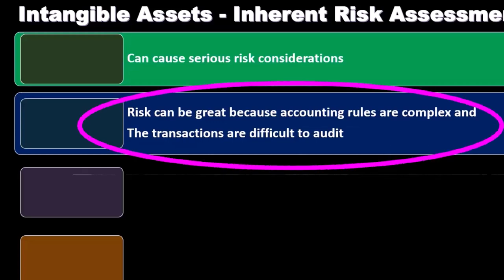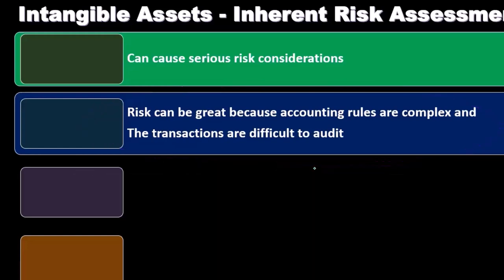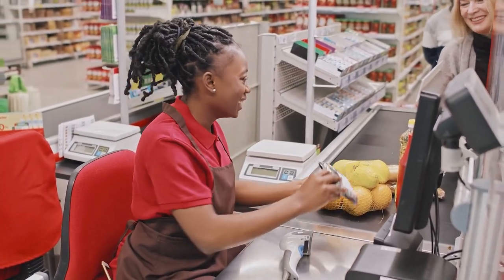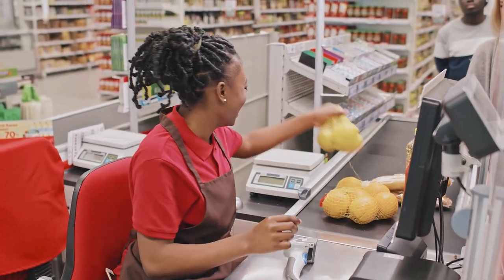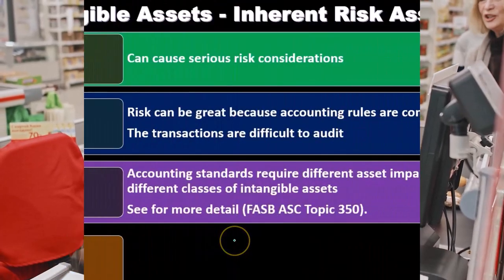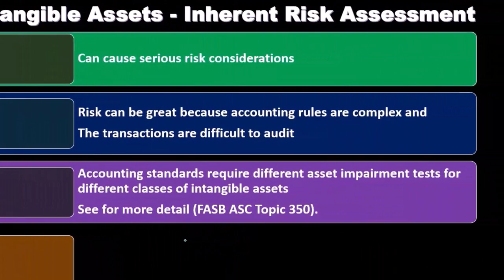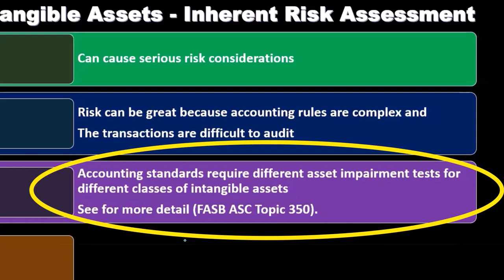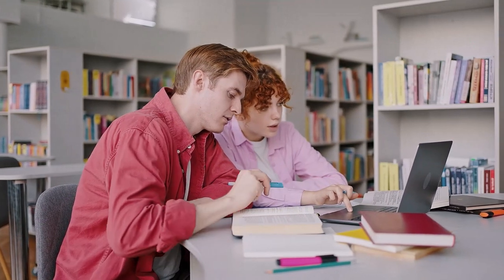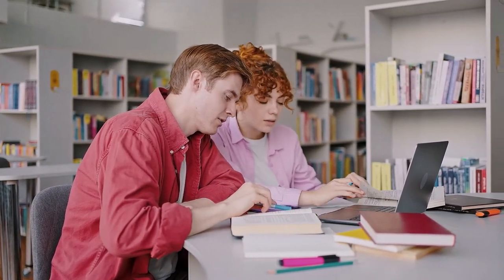Risk can be great because accounting rules related to intangible assets are complex, and these things are difficult to value. The transactions are also difficult to audit — contracts arising from intangible assets can be quite complex in some cases. Accounting standards require different asset impairment tests for different classes of intangible assets, and from a regulatory standpoint, what we typically want to do is record them appropriately on the financial statements.